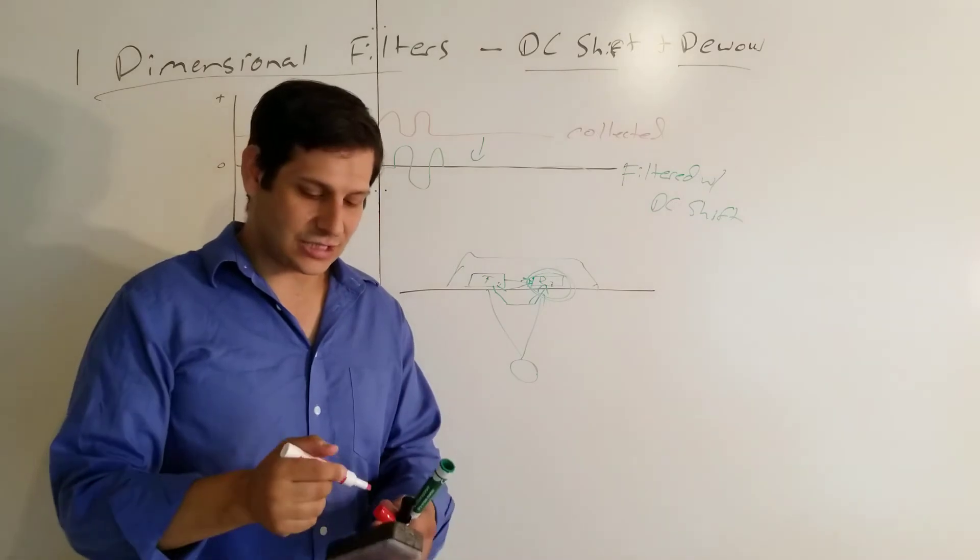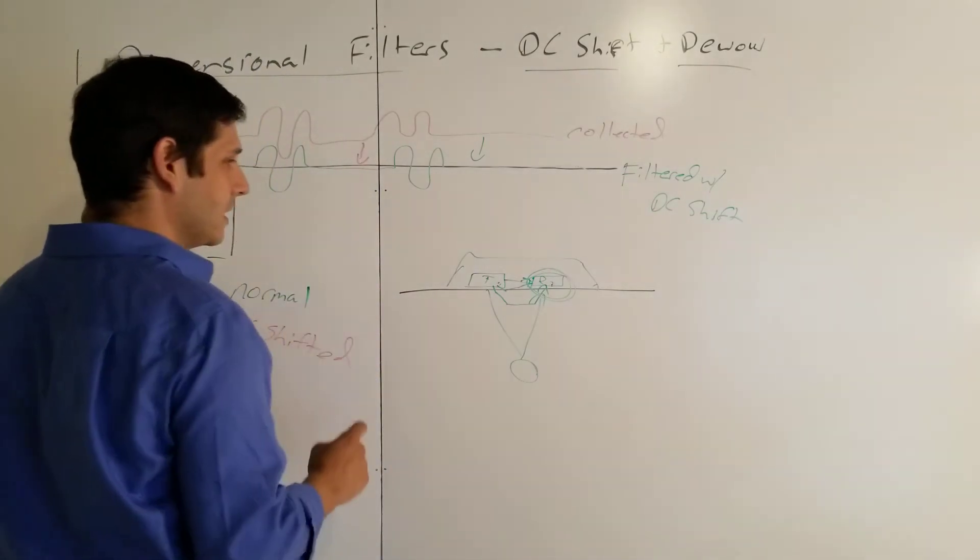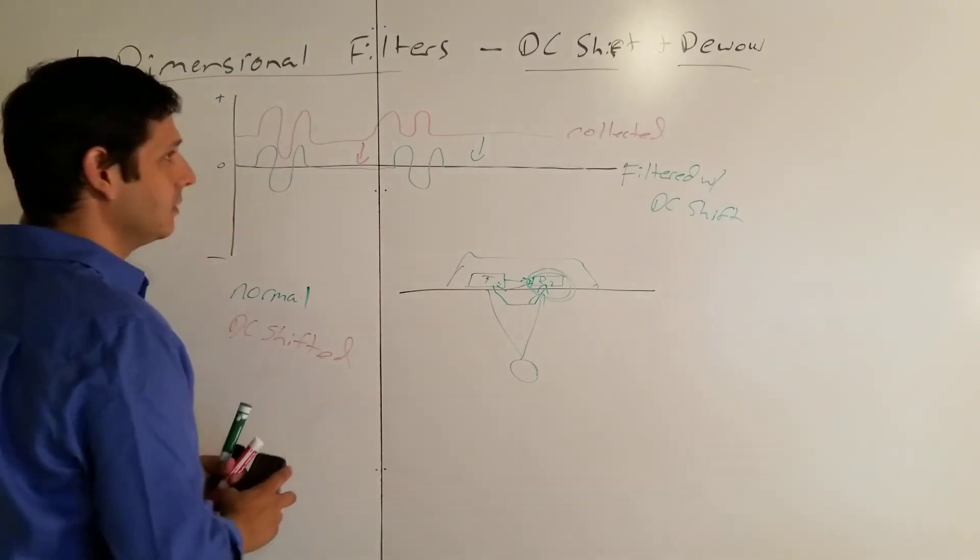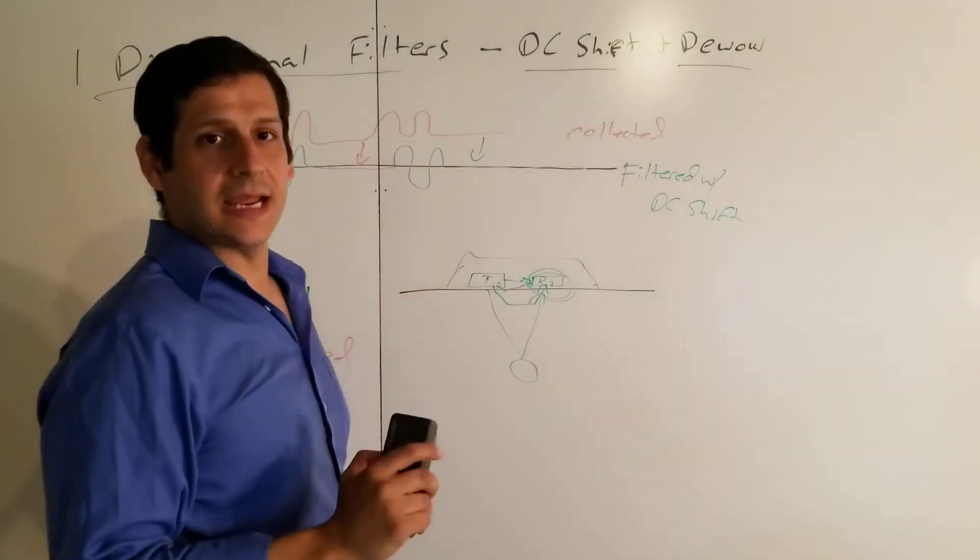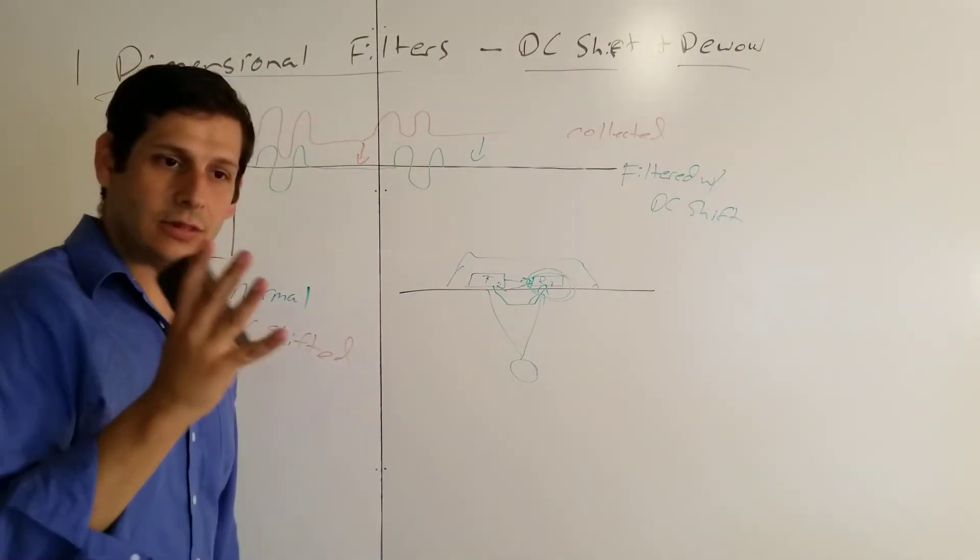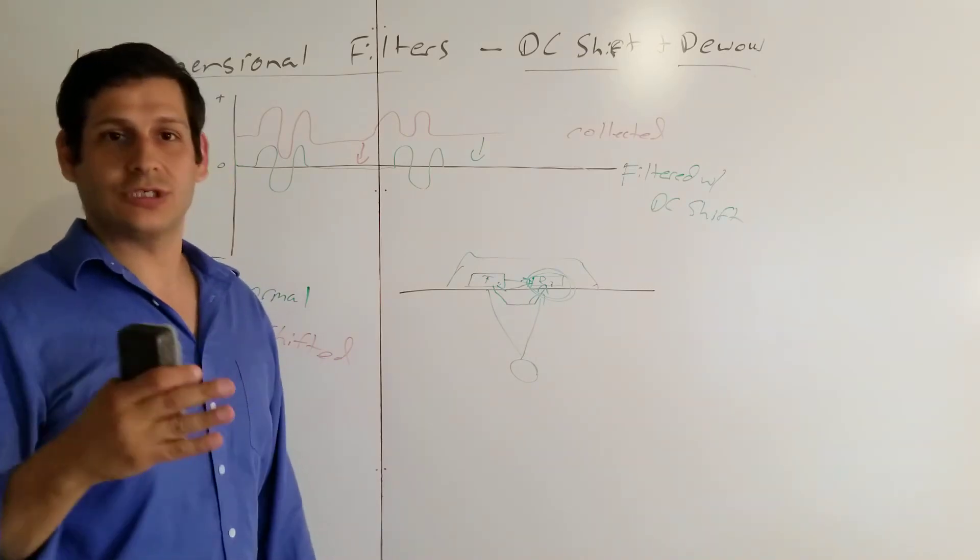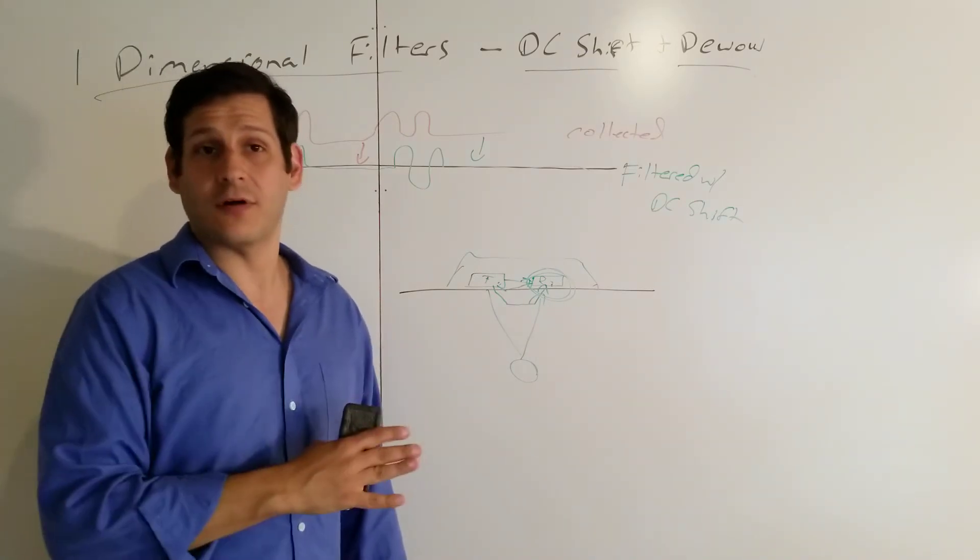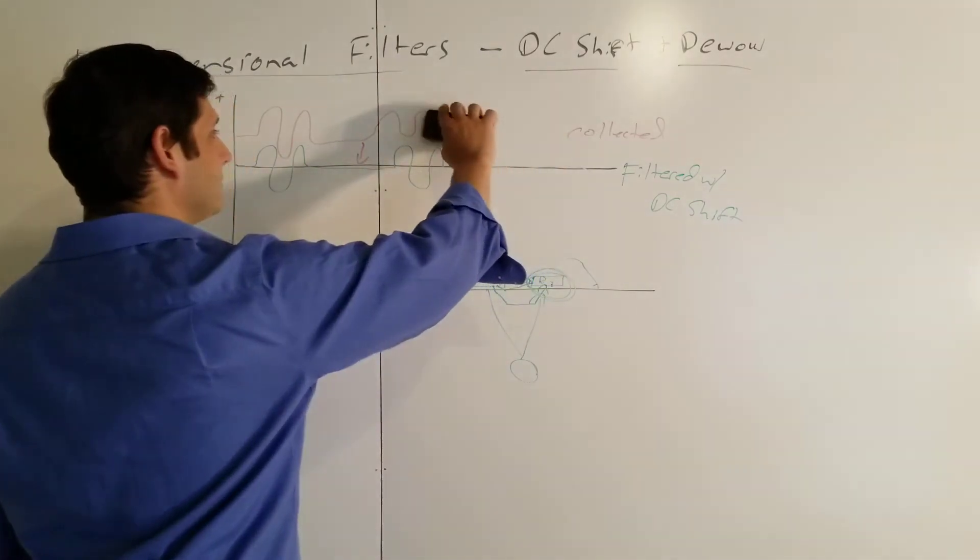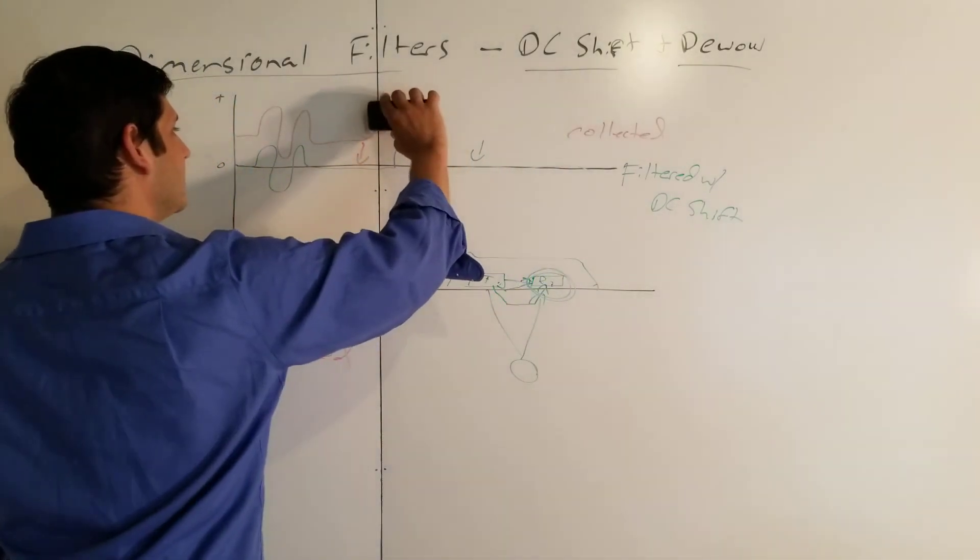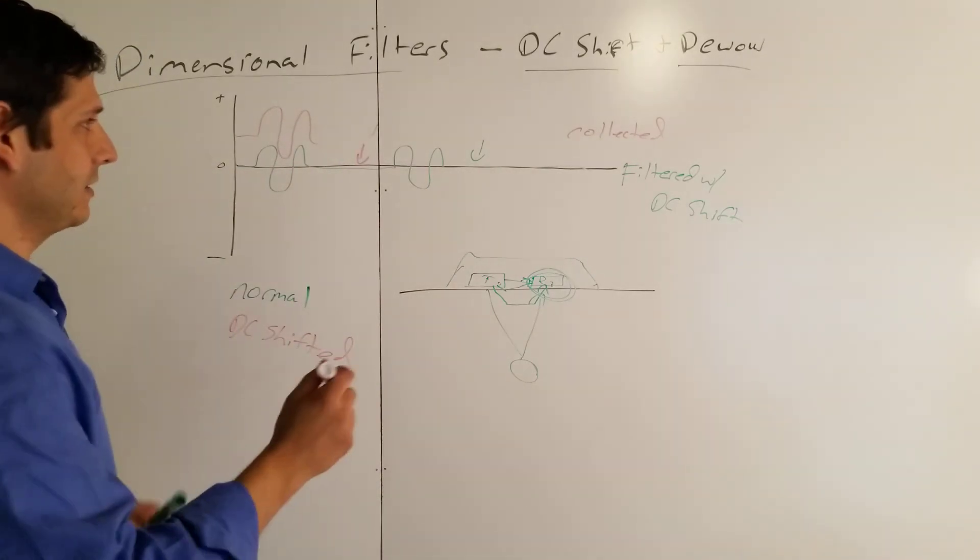However, there is a second problem for your one-dimensional trace. And here's how that goes. Your mean usually doesn't stay as your mean. You have what's called a low-frequency wow of your data, which is basically drift from the mean as your trace is being collected. Instead of like this, what it collects is this.